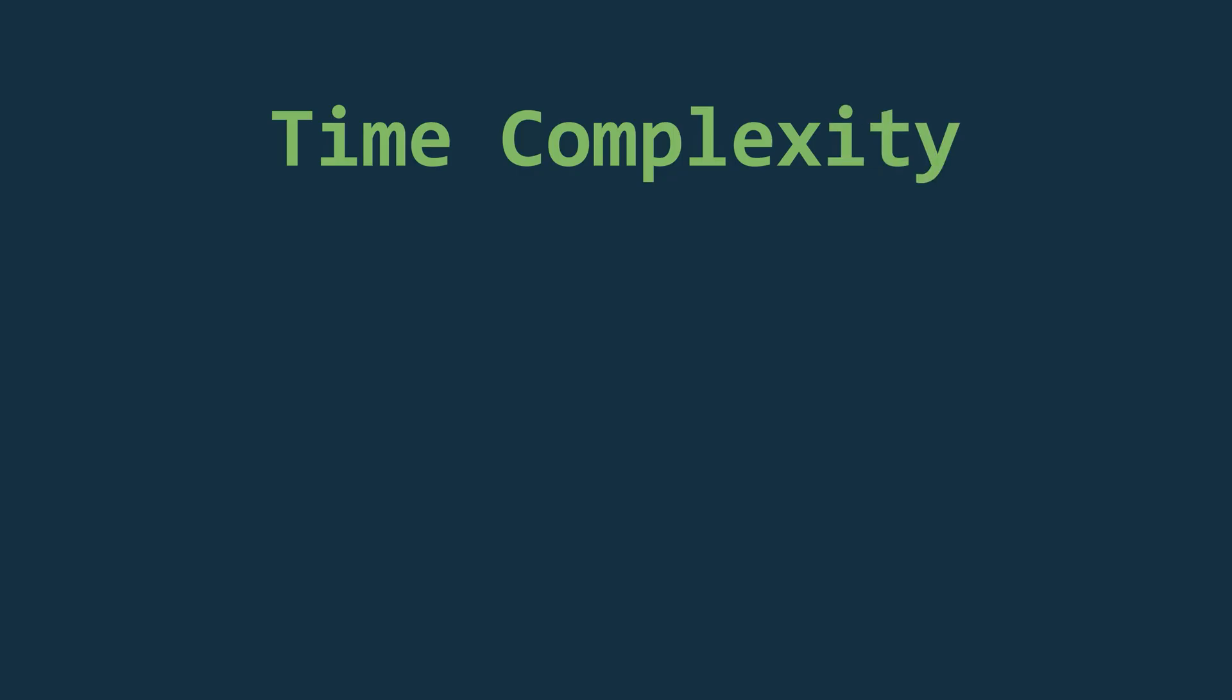Now in the worst and average case, the algorithm will iterate over each element once. And in each iteration, it will compare on average half of the elements, giving a total time complexity of n square.